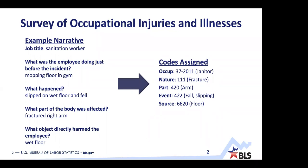For most of our history, we've assigned these codes by hand — people reading narratives and assigning codes. This takes a lot of resources. We estimate that if you were to code all the data collected in a single year, it would take about 12 years working full-time on nothing else. So we have dozens of people across the country, but that introduces additional challenges.